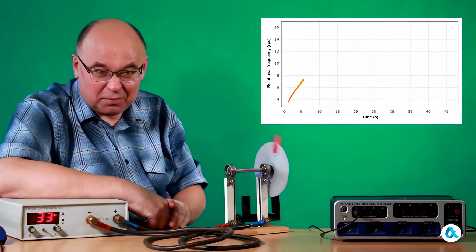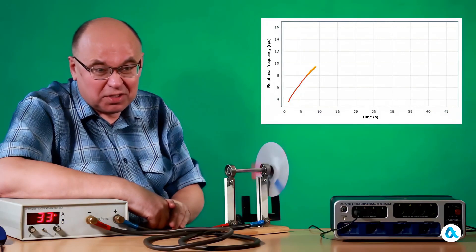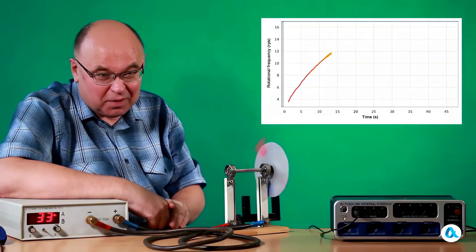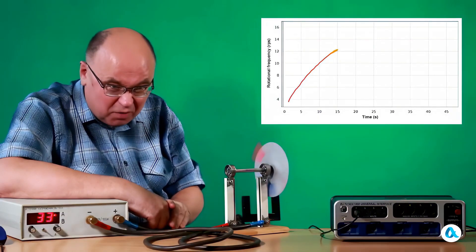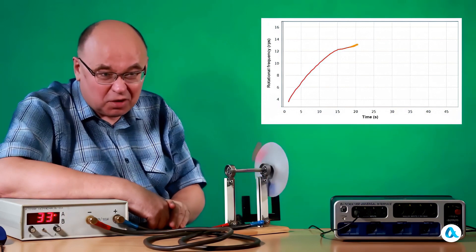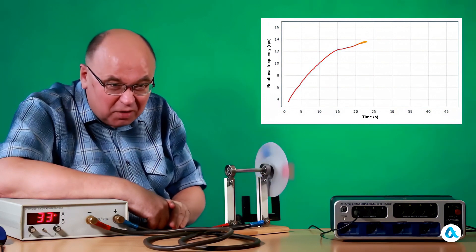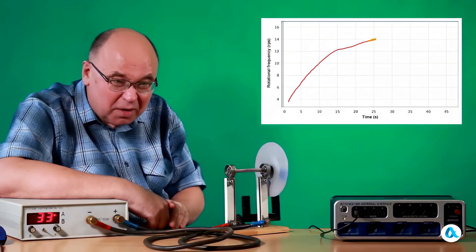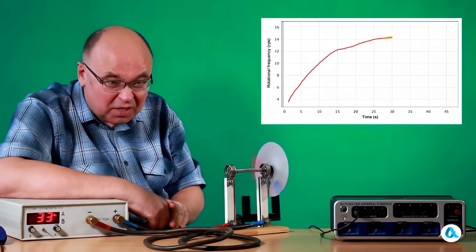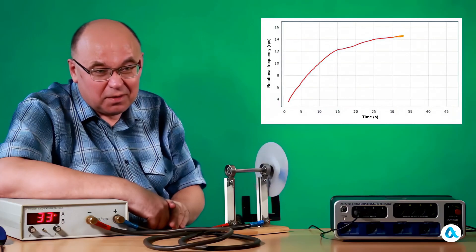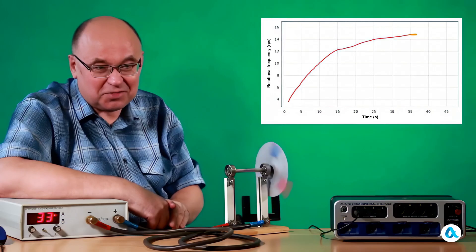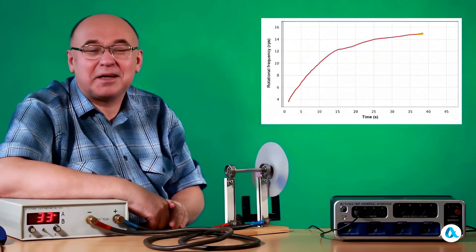We can see it picking up speed, 8 revolutions per second, 10 revolutions per second. The speed is increasing, already 12 revolutions per second. And we can see that after 20 seconds of operation, the motor gradually begins to reach a steady speed. Now it's already 14 revolutions per second. But the increase in rotational speed has practically stopped.